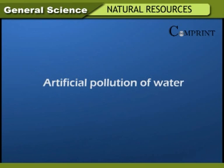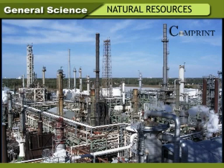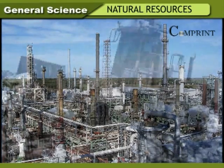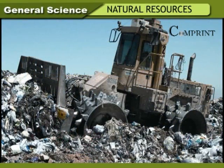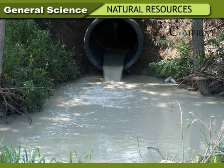Artificial pollution of water — Industrial waste: As industries require water, they are located nearer to sources of water like lakes, rivers, and ponds. Industrially discharged wastes contain poisonous chemicals and radioactive substances, which are sent into water sources causing water pollution. This is not only fatal to marine life, but even human beings are prone to diseases by drinking this water.